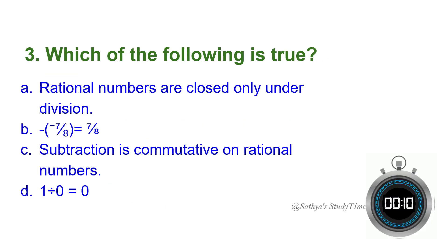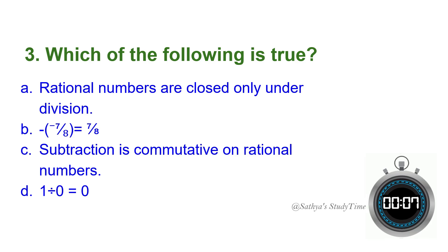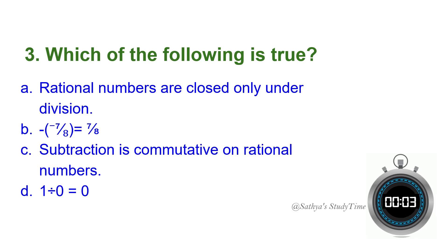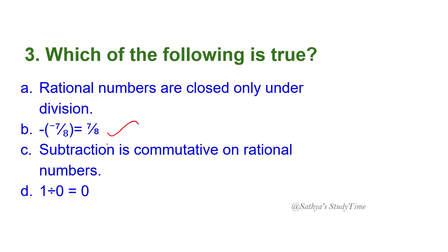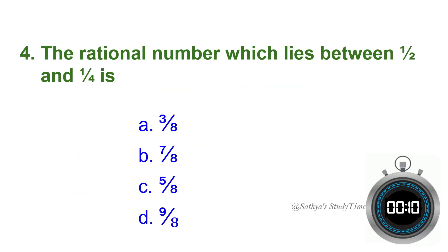Third question: Which of the following is true? Four options are given. Your time starts now. The answer is: minus of minus 7/8 equals 7/8 — that is the true statement. The first option is wrong, the second option is true, 'subtraction is commutative' is wrong, and '1 divided by 0 equals 0' is also wrong.